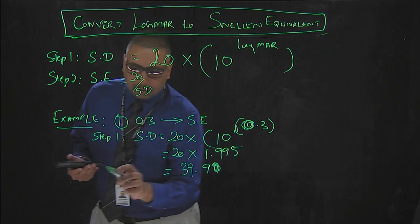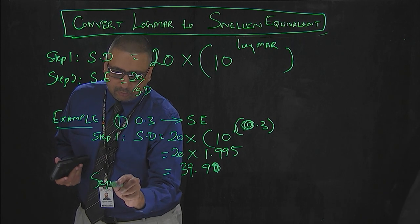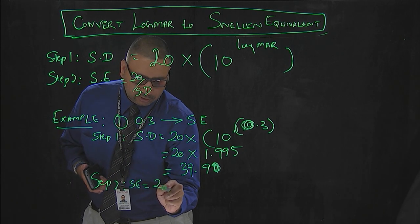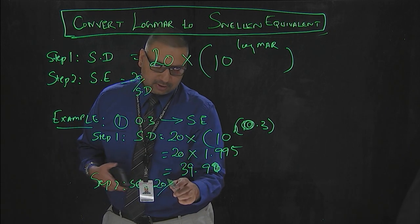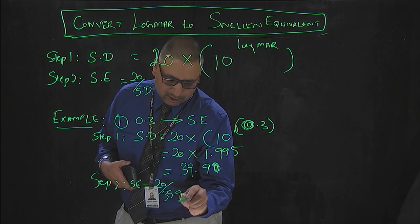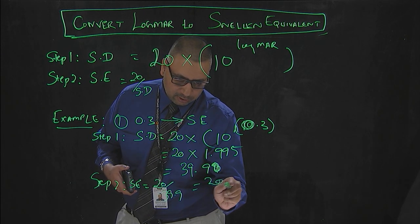Your next step, step 2, is Snellen equivalent. The numerator is the fixed distance, the denominator is 39.9. You can round that out, you can keep it as it is, or you can say 20/40.